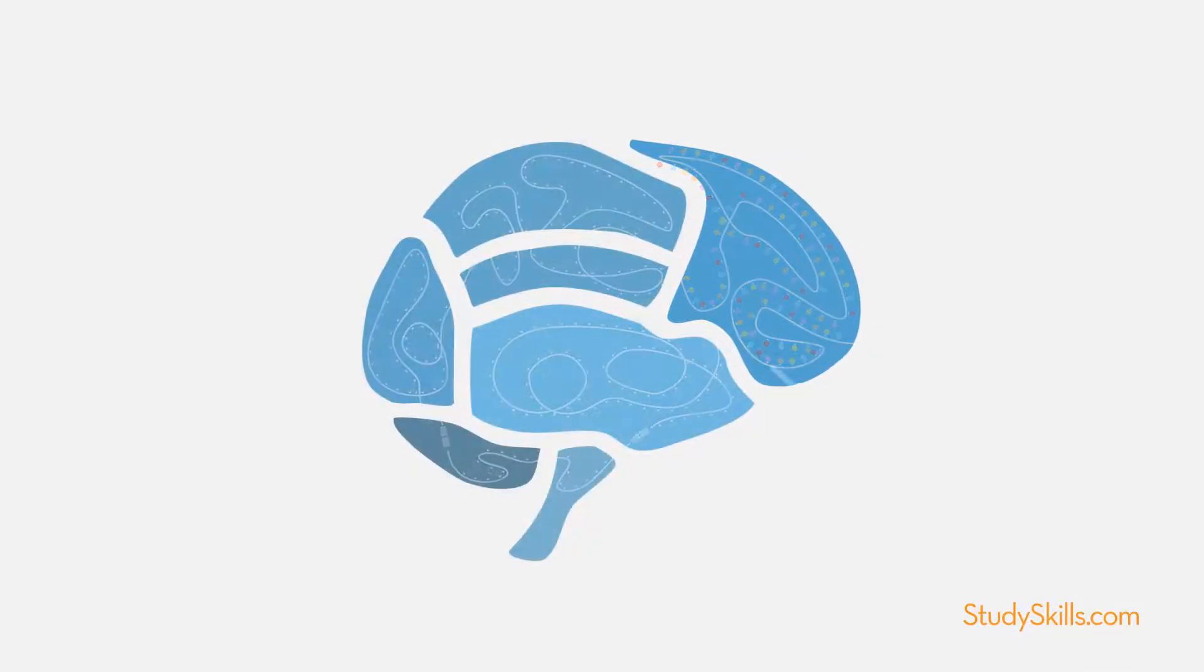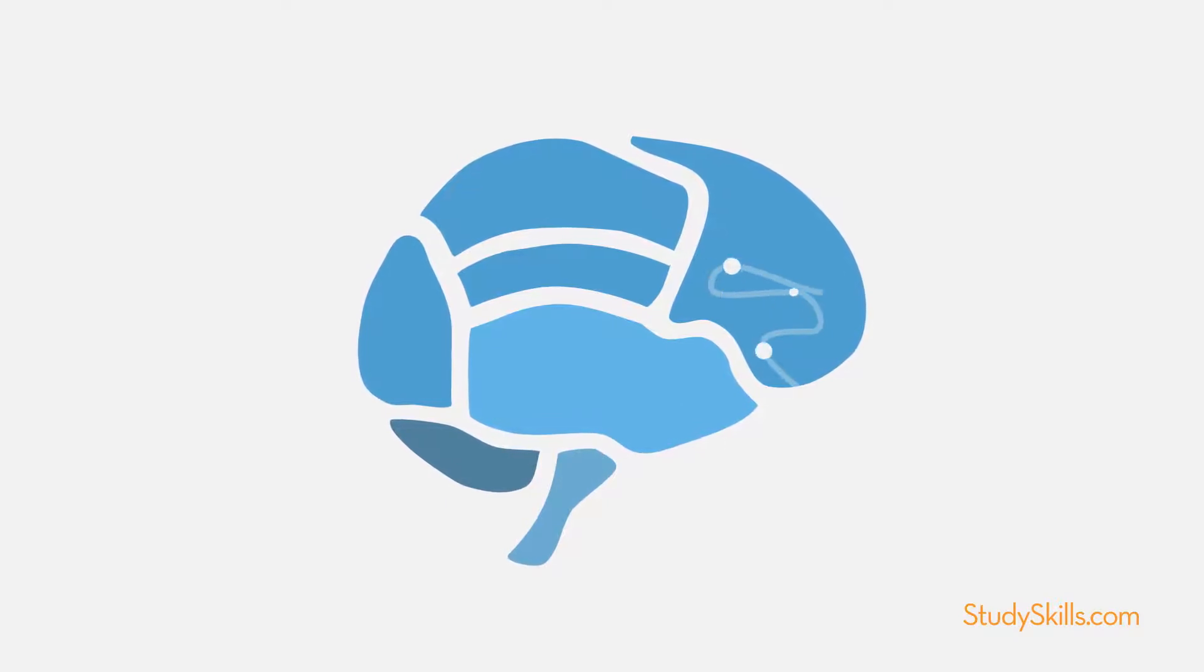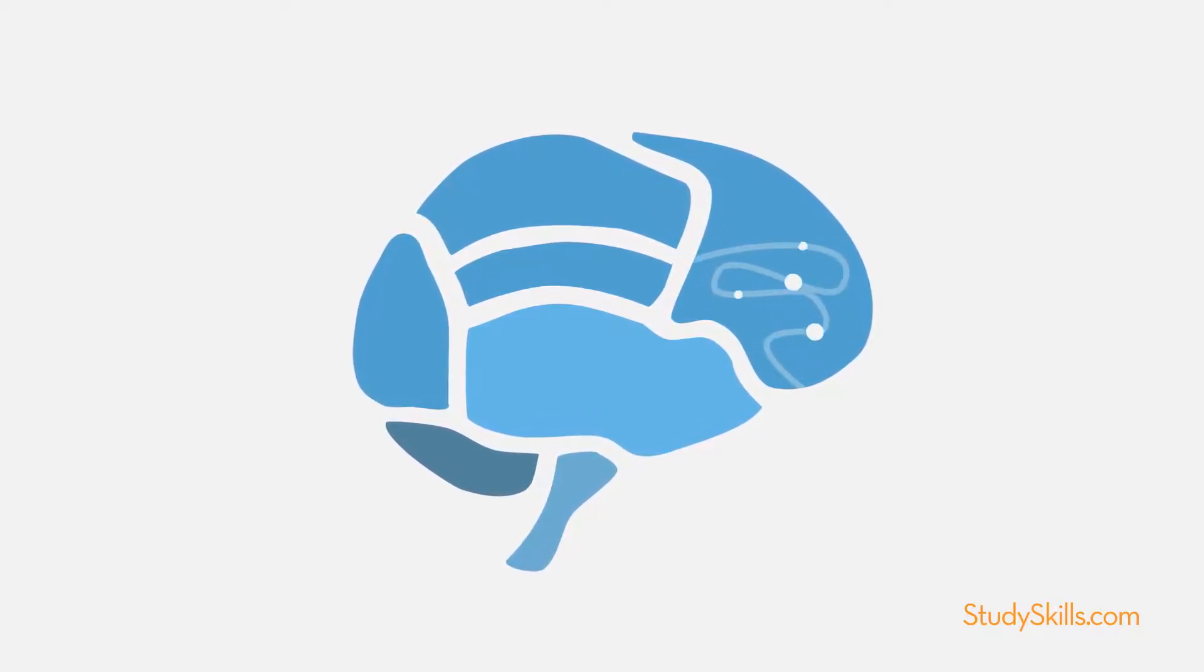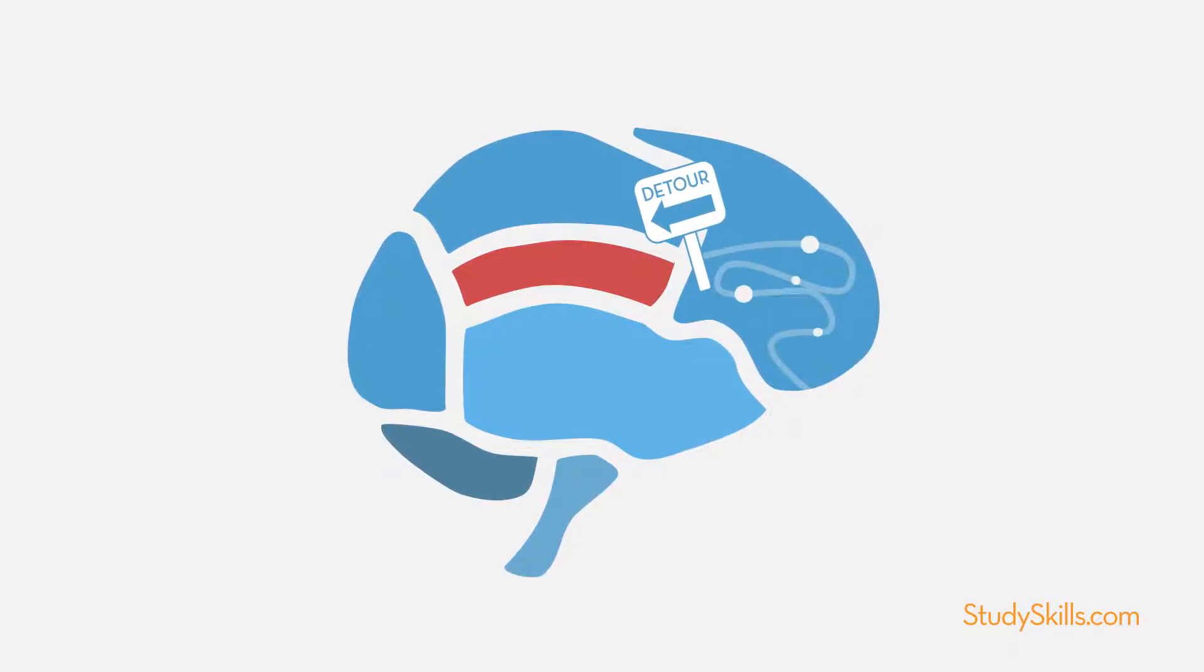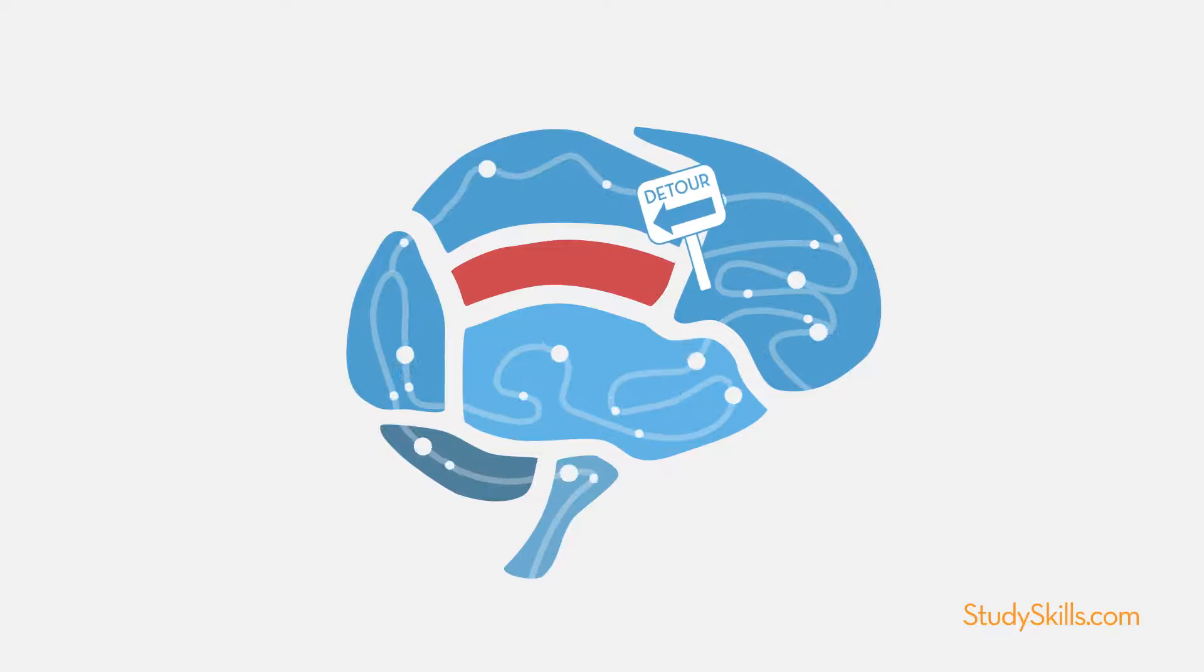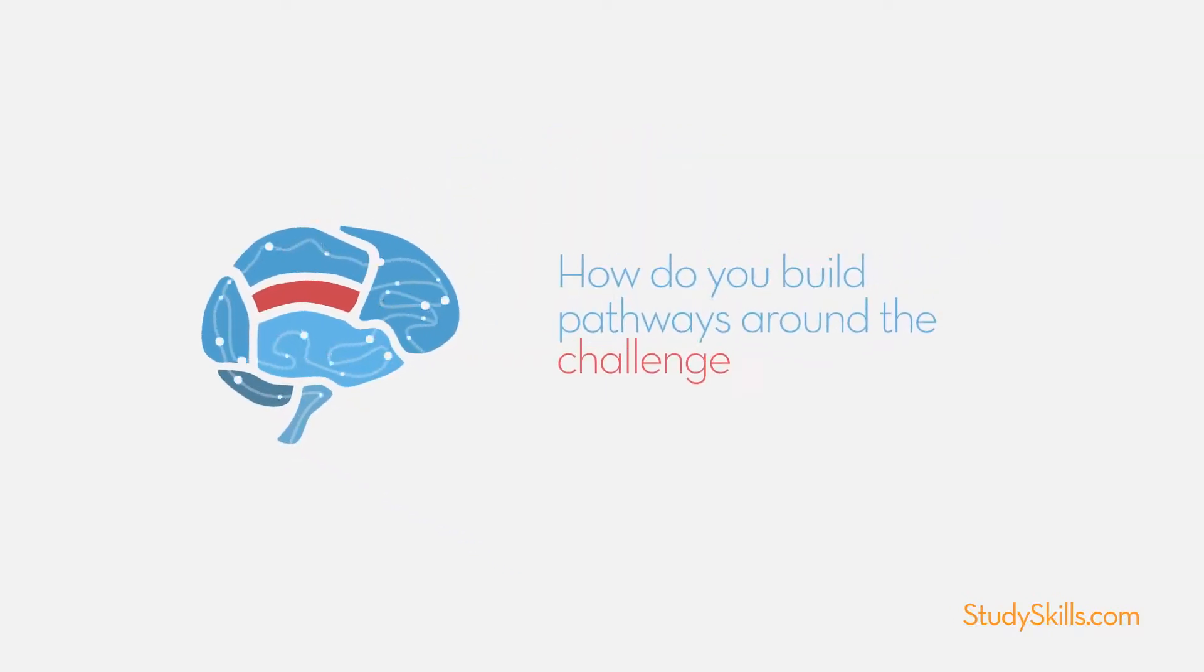However, the good news is that your brain can grow an unlimited number of neuron wires. So when there is a challenged area, other sections of your brain can build pathways around it, like a detour. How do you build pathways around the challenge areas?